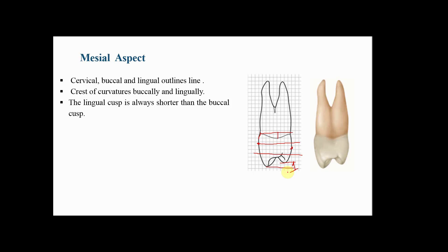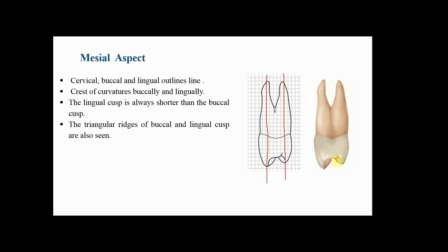Regarding the occlusal outline, the buccal cusp is larger and longer than the lingual cusp — the difference is one millimeter in length — because the lingual cusp is developed from a single lobe while the buccal cusp is developed from three lobes. Both cusp tips are in line with their respective root apices: the tip of the buccal cusp is in line with the apex of the buccal root, and the tip of the lingual cusp is in line with the apex of the lingual root.